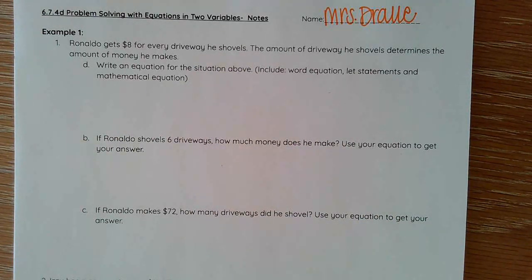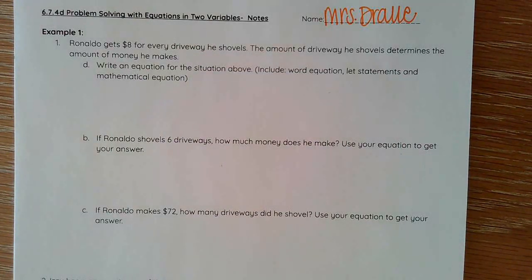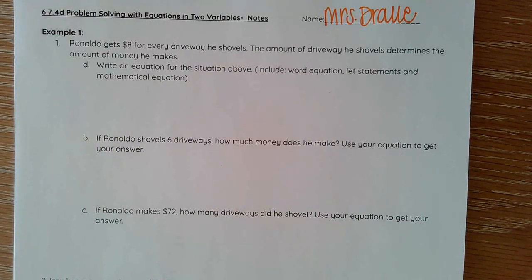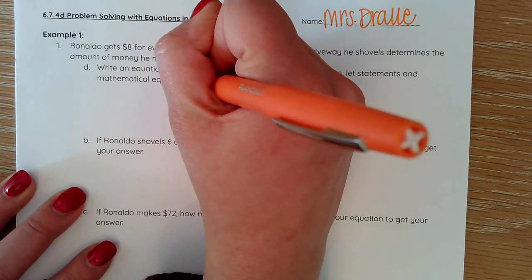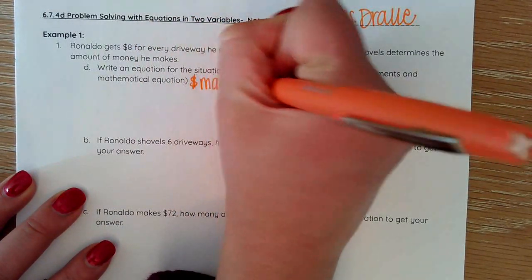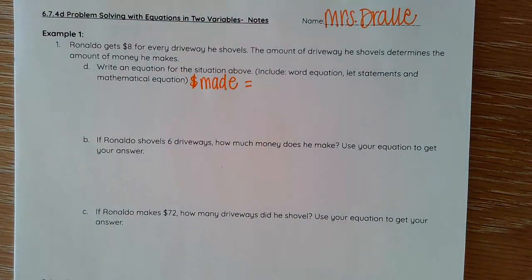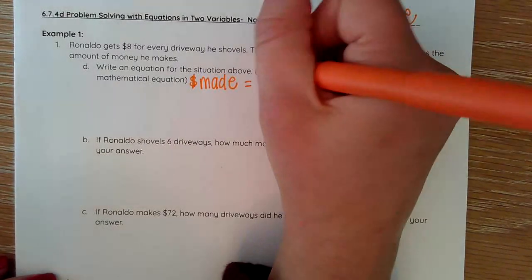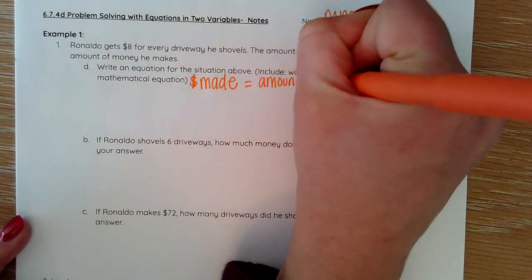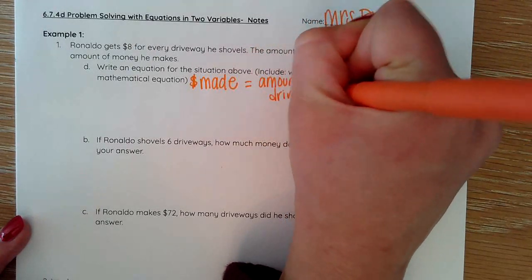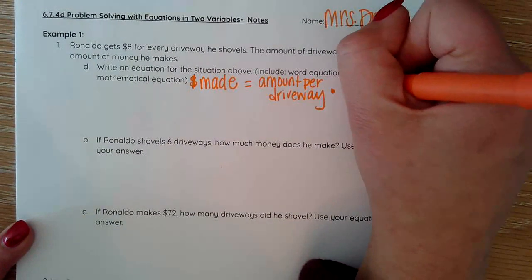It says Ronaldo gets eight dollars for every driveway he shovels. The amount of driveways he shovels determines the amount of money he makes. The first thing I'm going to do is write my equation. I'm going to include the word ratio, the let statements, and the mathematical equation. Money made is going to equal the amount he makes per driveway multiplied by the amount of driveways he shovels.